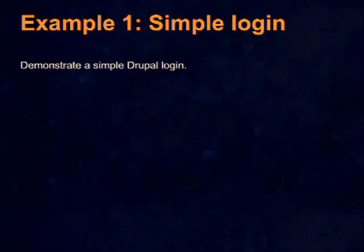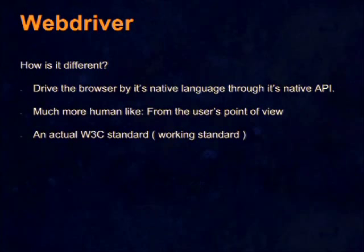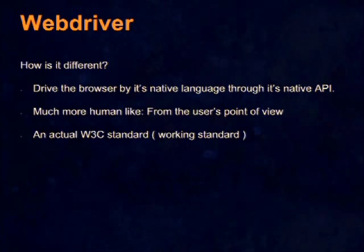So we did our simple test. Now we want to talk about WebDriver. WebDriver is Selenium 2. It was a separate project, but WebDriver is Selenium 2. One of the main things that's important about it is that they want to drive it from the user's point of view — they don't want to drive it as a browser per se. They drive it by the browser's native API. For example, Internet Explorer — if you were going to write something for Internet Explorer in the most efficient way, you'd probably fire up Visual Studio and program in C++ because its automation bindings are in C++.